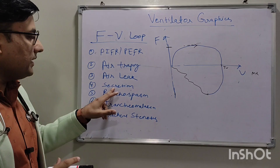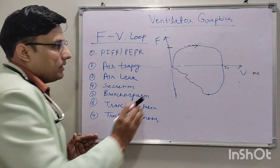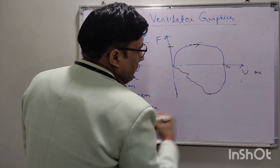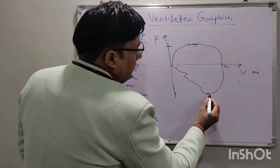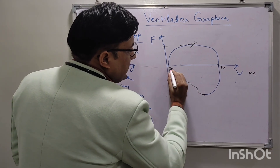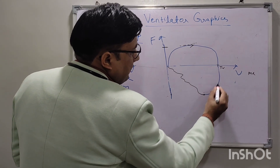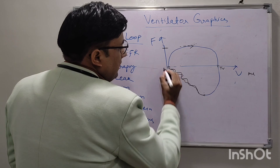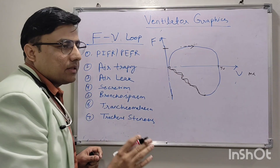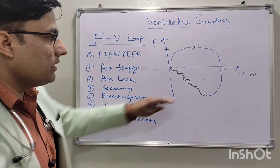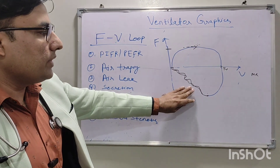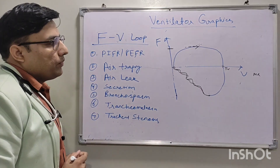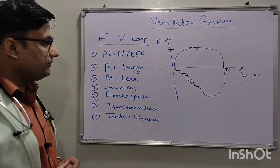If any airway secretions are present, the expiratory curve will become zigzag. This tells us that airway secretions and some tube secretions are present, so we have to perform suctioning. This is very important to recognize.